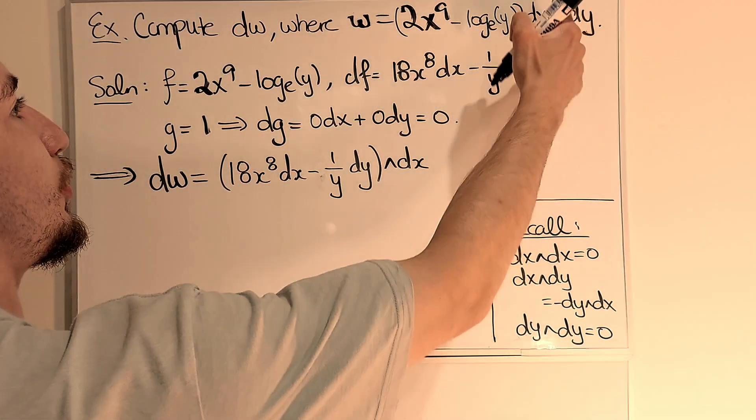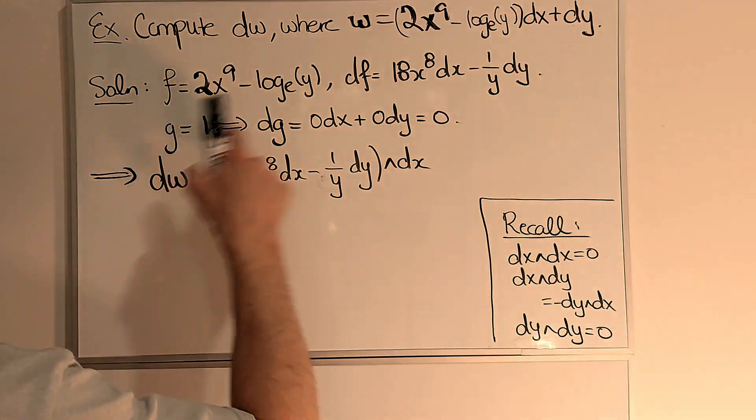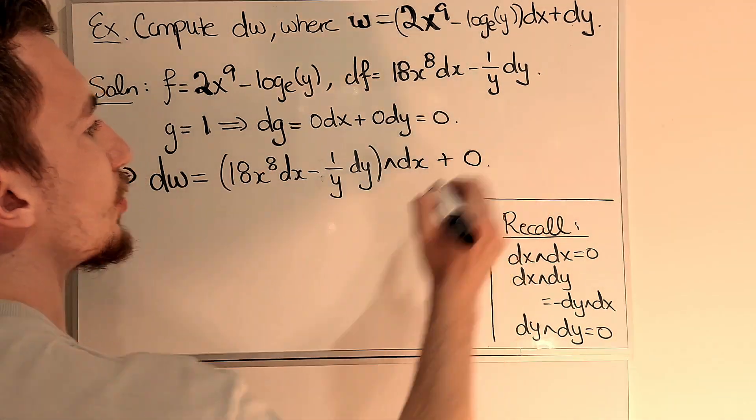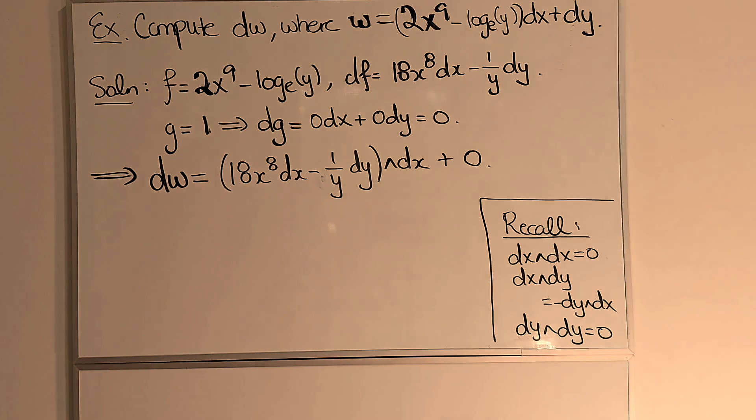And I computed the exterior derivative of 1, that was 0, so I'll have 0 coming from there. I don't have to worry about the wedge product in that case.